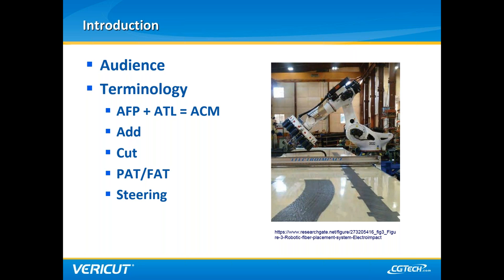An ADD is the process of adding a single instance of material to a form, and a cut is the process of cutting a single instance of material. PAT stands for preliminary article testing and consists of machine validation and testing, typically at the machine tool builder's facility — the first instance the machine is put through its paces. FAT stands for final article testing and is the final validation done at the customer site under real conditions. Steering is the process of guiding material in a specific, non-straight direction.